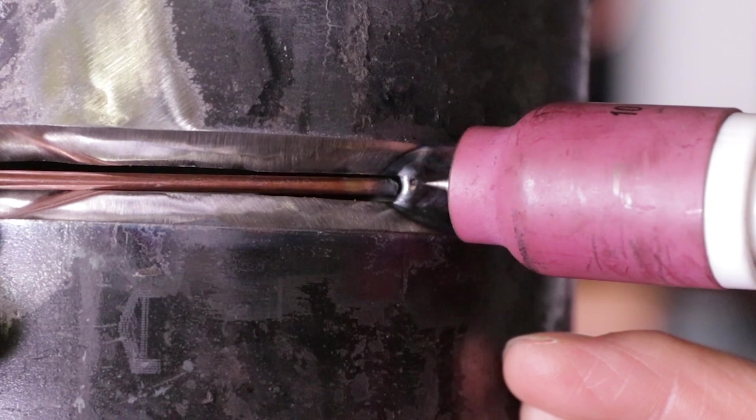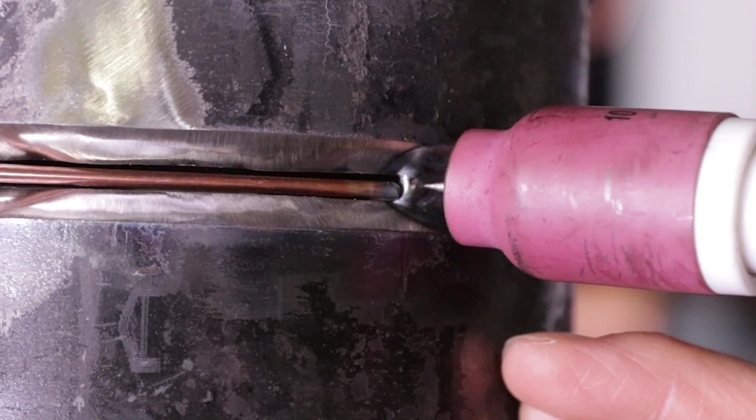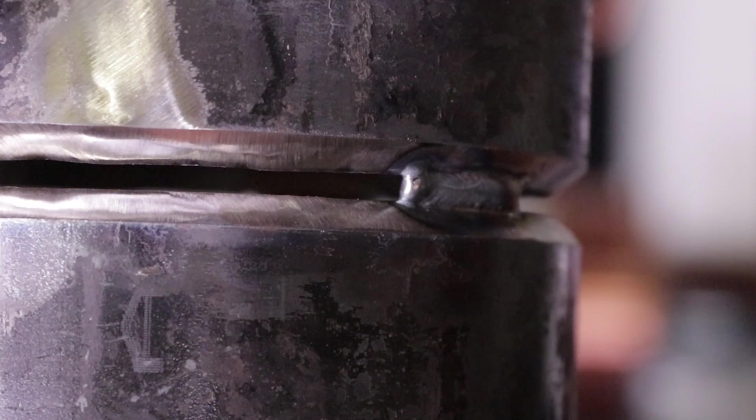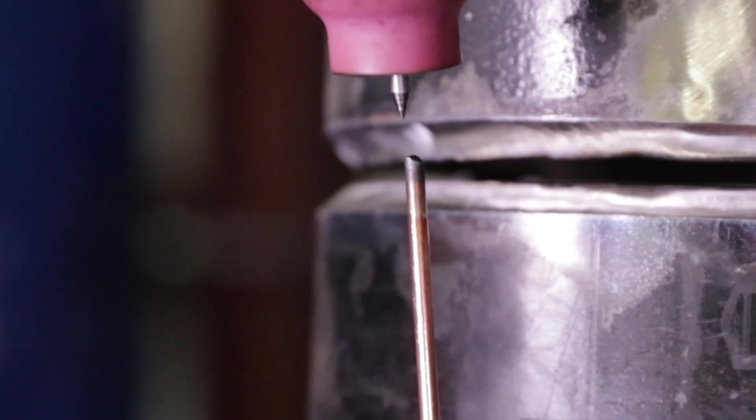That's very important. Remember, tungsten back here, the rod a little bit in front of it, right here like this. You never weld with your tungsten perpendicular to your rod like this, never.